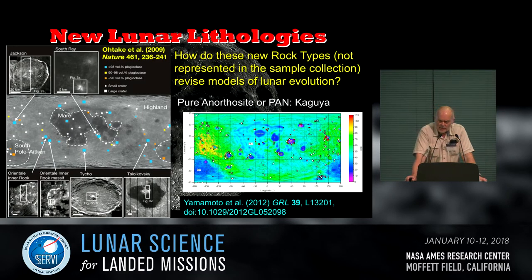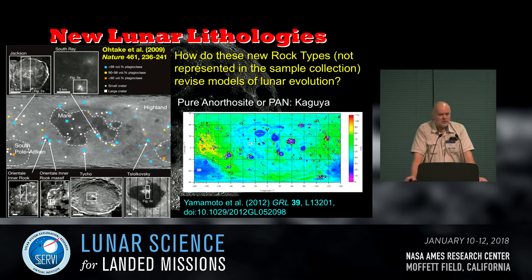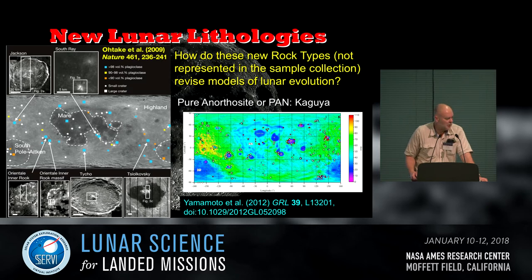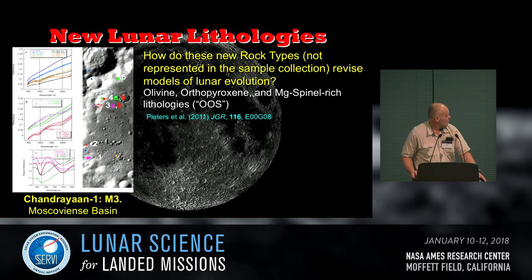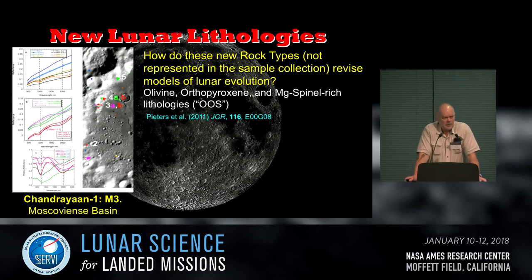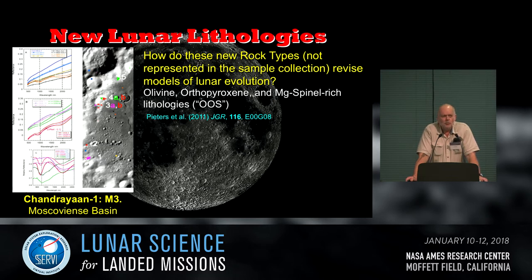With the Japanese SELENE mission KAGUYA, the idea of pure anorthosite was proposed, and it is present on the surface of the Moon as seen from orbit at the pixel size of the instruments on the orbiter. With M-cubed on Chandrayaan I, Carly Peter's group introduced us to OOZE — the olivine orthopyroxene spinel lithologies. It's a great acronym, and I think it's one we can use.